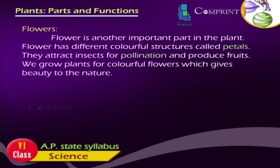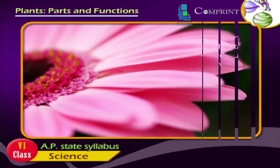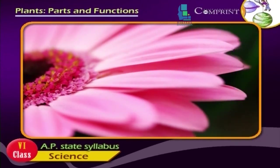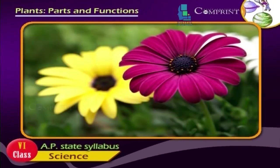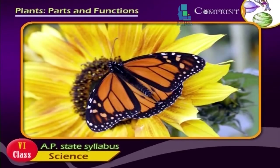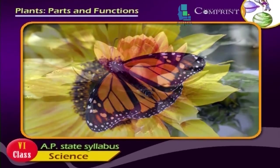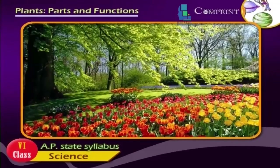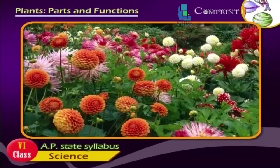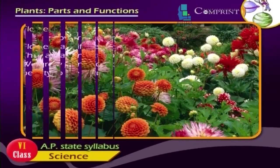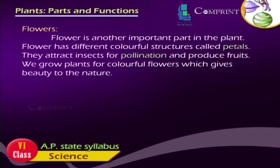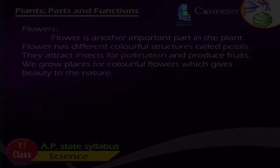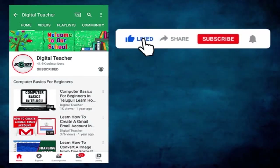Flower is another important part of the plant. Flowers have different colorful structures called petals. They attract insects for pollination and produce fruits. We grow plants for colorful flowers which give beauty to nature.